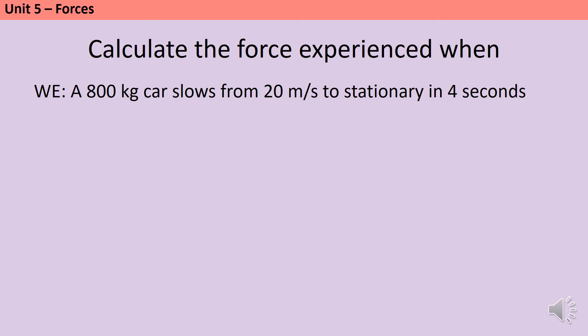So, in this worked example, I have an 800 kilogram car slowing from 20 meters per second to stationary in four seconds, and I want to know what will be the size of the force that is exerted on that car. The first thing I need to do is to calculate the change in momentum. So, my 800 kilogram car has changed velocity from 20 to zero and therefore its change in momentum was 16,000 kilogram meters per second.